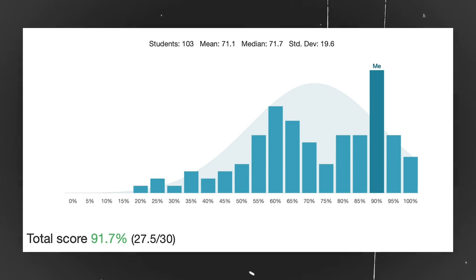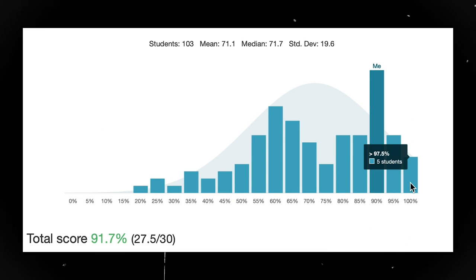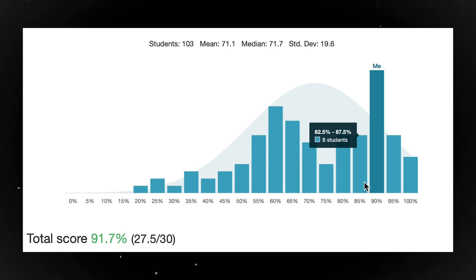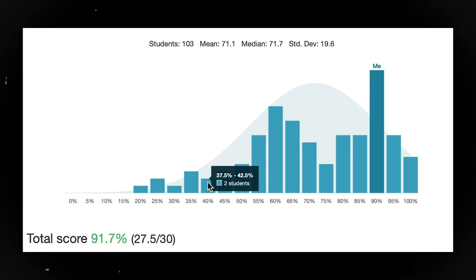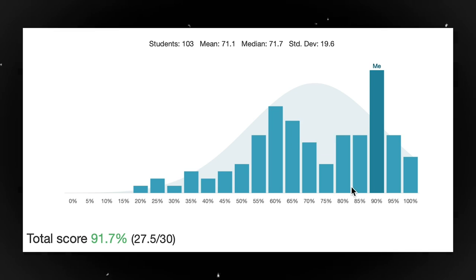Out of the 30 marks available for this test I scored 27.5 which roughly equates to 91.7%. The average was 71% and this was how all other students in my class performed on this exam. Surprisingly quite a few people got a perfect score.